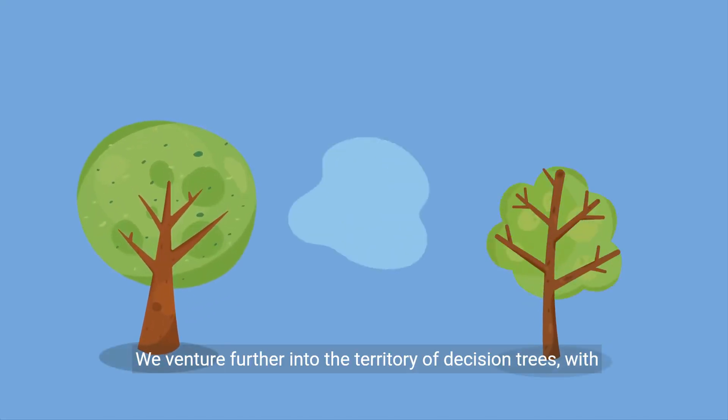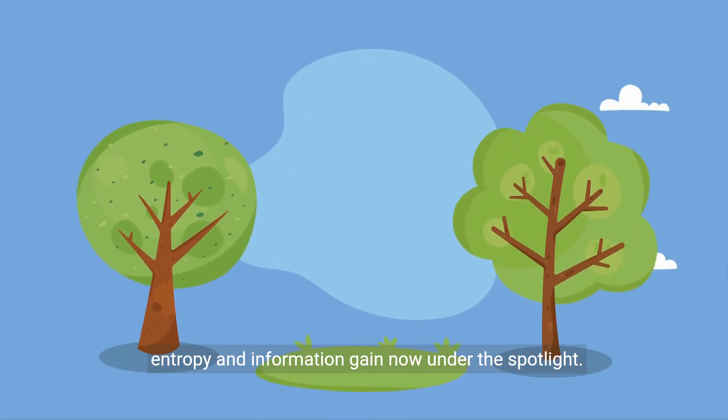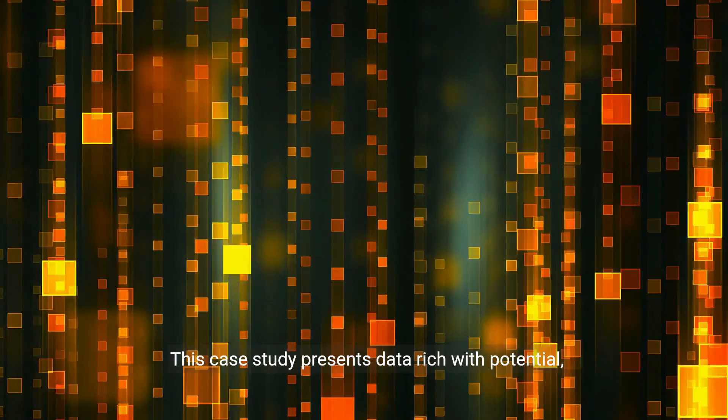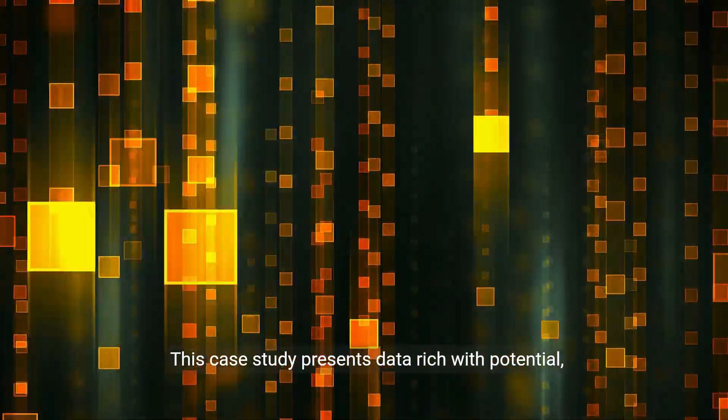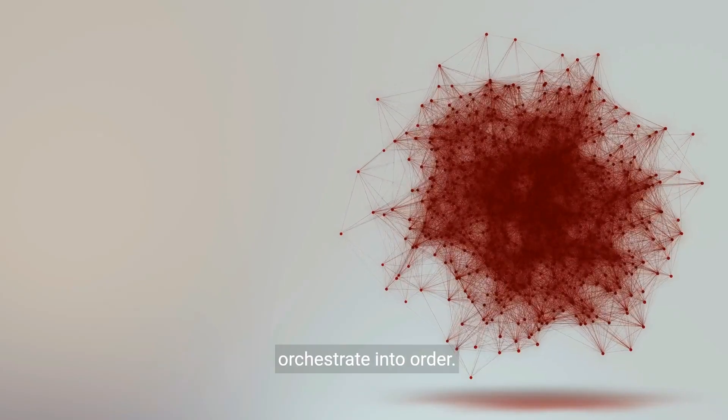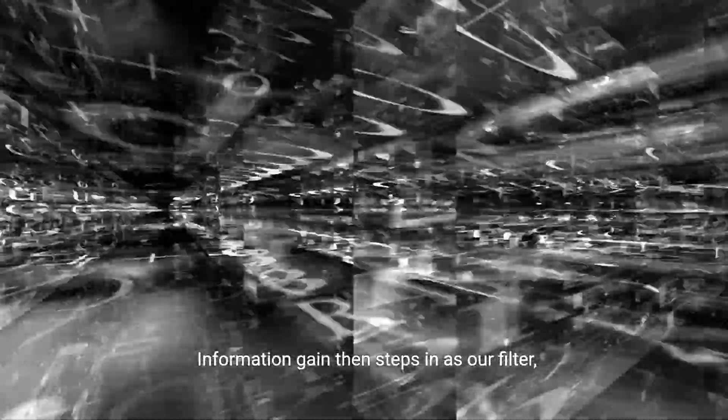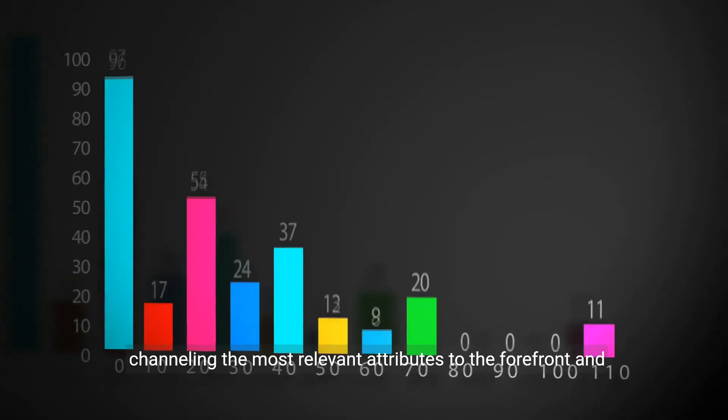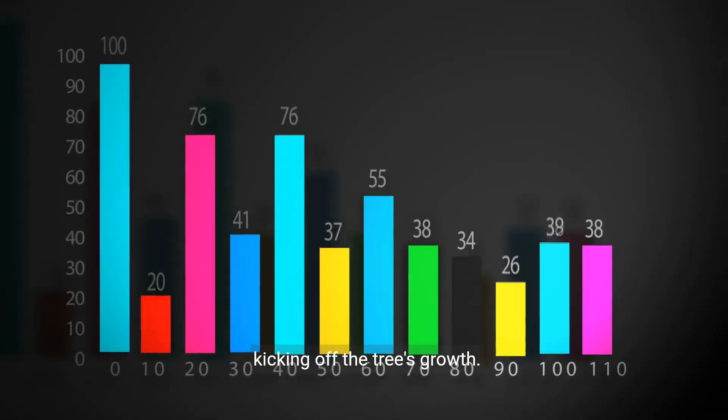We venture further into the territory of decision trees, with entropy and information gain now under the spotlight. This case study presents data rich with potential, calling on entropy to highlight disorder that we aim to orchestrate into order. Information gain then steps in as our filter, channeling the most relevant attributes to the forefront, and kicking off the tree's growth.